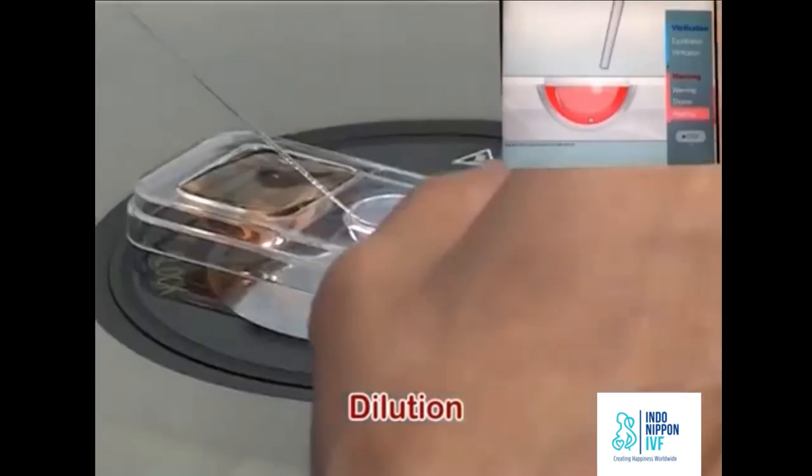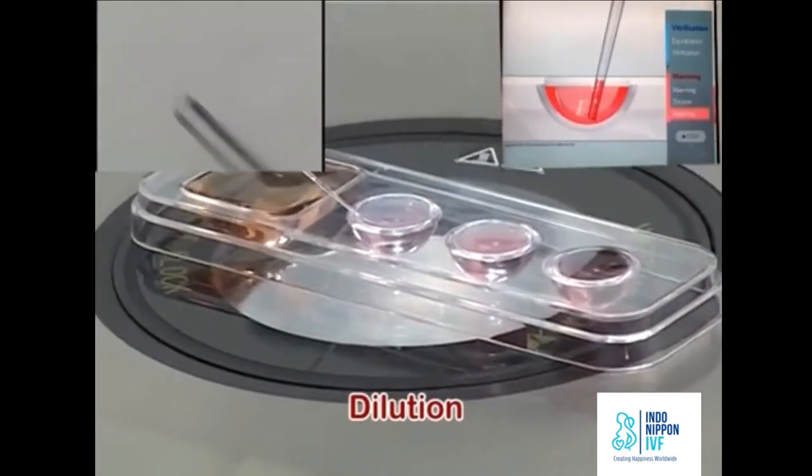At the end of 3 minutes, aspirate the oocyte and 3 mm long of DS into the pipette.